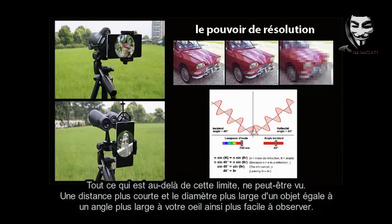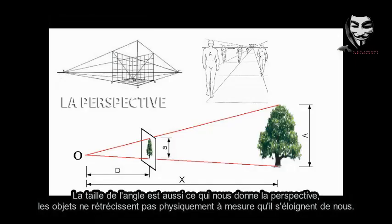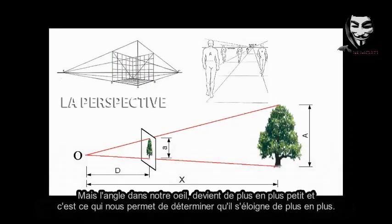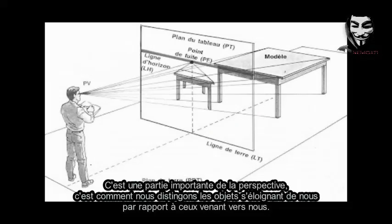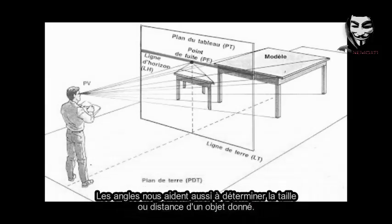A shorter distance and larger diameter of an object equal a larger angle at your eye, thus easy to resolve. A longer distance and smaller diameter of an object equal a smaller angle, thus difficult for your eye to resolve. The size of the angle is also what gives us perspective. Objects do not physically shrink in size as they move away from us, but the angle in our eye gets smaller and smaller, which is what allows us to determine that it is moving further and further away. For objects coming toward us, the angle will get larger, and the object will appear to be larger on the retina. This is how we distinguish objects moving away versus coming toward us, and the angles also help us determine the size or distance of any given object.